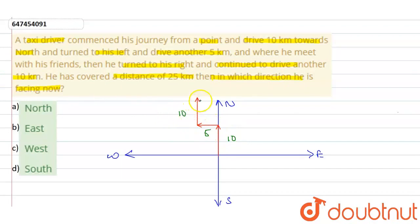तो total यह 25 km travel कर लिया है. तो बोल रहा है कि अभी वो किस direction को face कर रहा है. तो अभी यह North direction को face कर रहा है जैसा कि हम देख सकते हैं. यह North direction पर जा रहा है. तो option हमारा क्या होता है - option A is the correct answer.